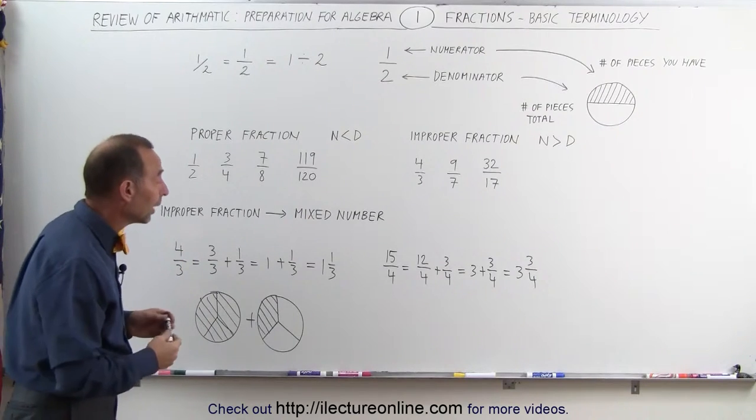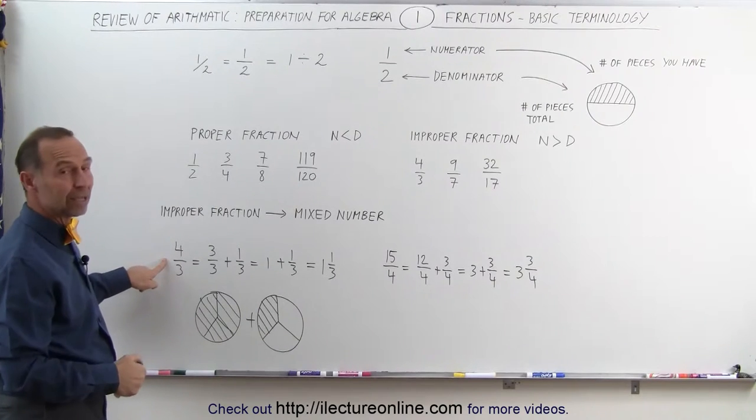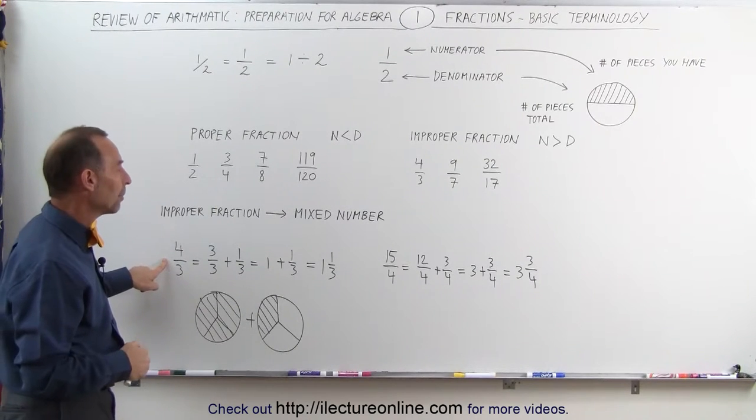The plus is really still there, but we simply don't write it. So this is called a mixed number, and it's exactly the same as this number right here, this fraction, which is called an improper fraction.